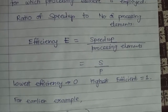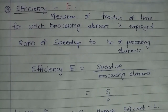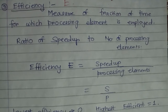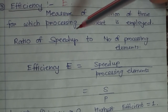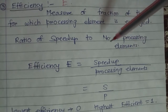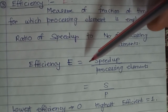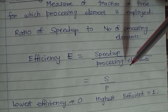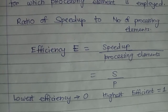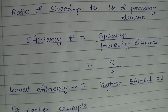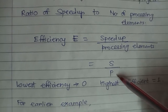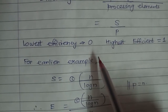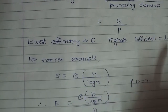Next we study efficiency of the parallel program. Efficiency, denoted E, is a measure of the fraction of time for which a processing element is usefully employed. It is the ratio of speedup to the number of processing elements. The formula is: efficiency E equals speedup S divided by number of processing elements p. We check how efficiently our parallel algorithm uses p processing elements. The lowest efficiency is 0 and the highest is 1.